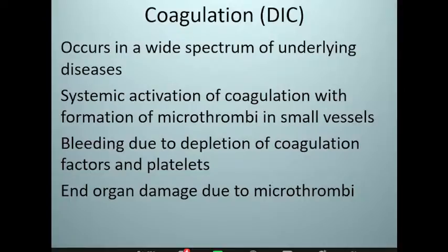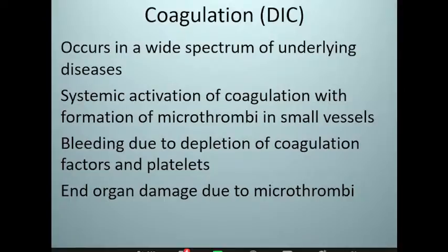In DIC — disseminated intravascular coagulation — the platelets also get consumed. There is a deficiency of coagulation factors because they are consumed, and the platelets are also consumed, so there is thrombocytopenia. As a consequence of these two arms of hemostasis being involved, there is diffuse bleeding. The small strands of fibrin formed in smaller blood vessels affect blood flow to those organs, causing organ damage due to the formation of microthrombi.